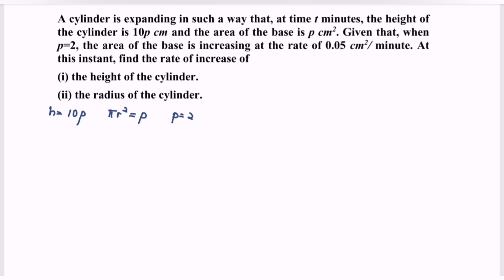So we have dp/dt is equal to 0.05. At this instant, find the rate of increase — number 1 — the height of the cylinder. So we are interested in dh/dt. That is step number 1: extract the info.